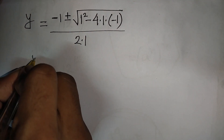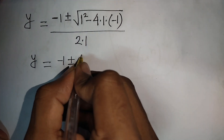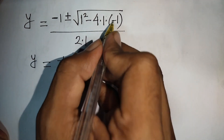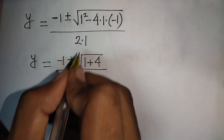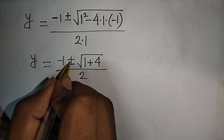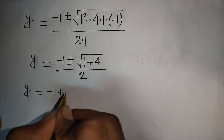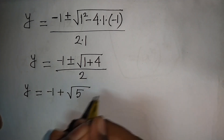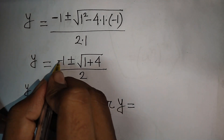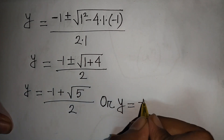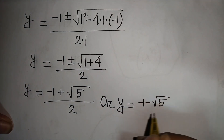So y equals negative 1 plus or minus the square root of 1 squared minus 4 times 1 times negative 1, divided by 2. This gives y equals negative 1 plus root 5 over 2, or y equals negative 1 minus root 5 over 2.